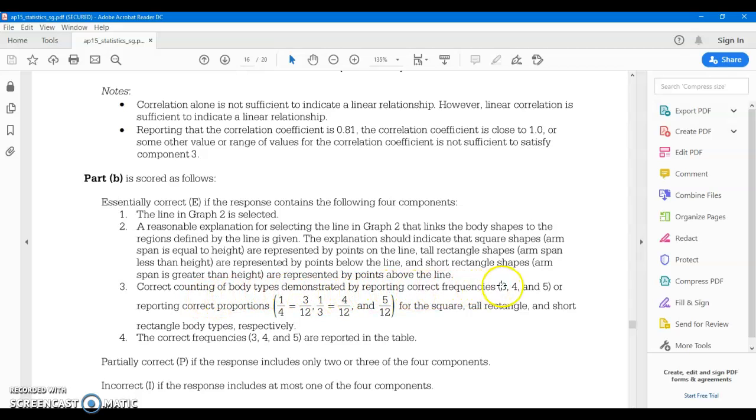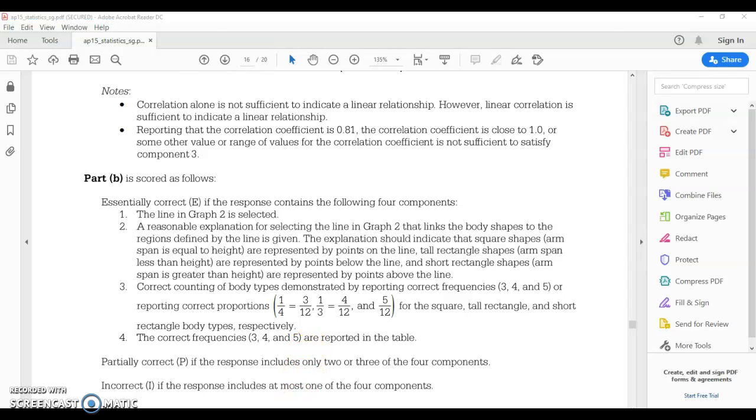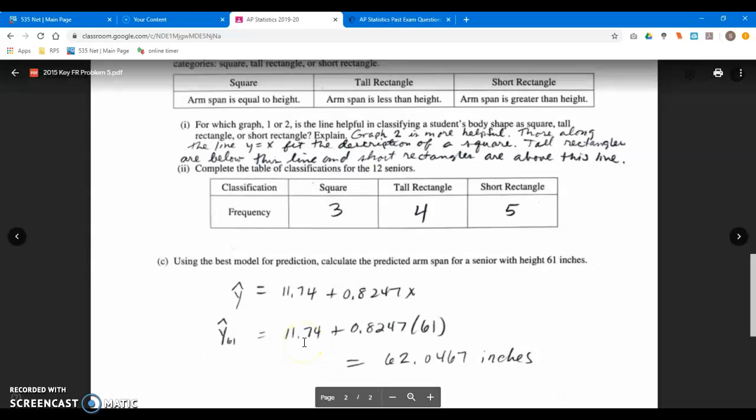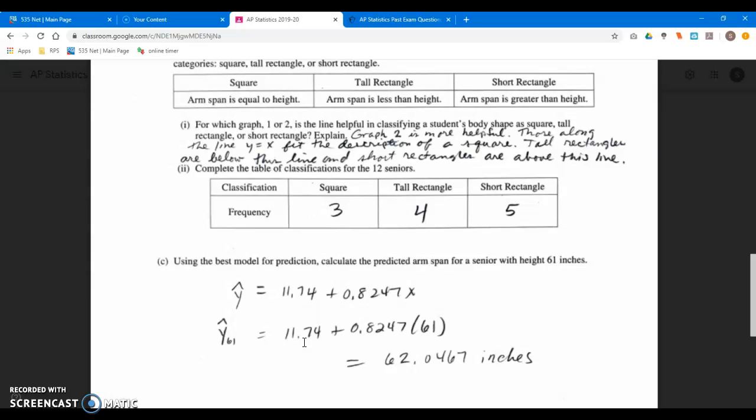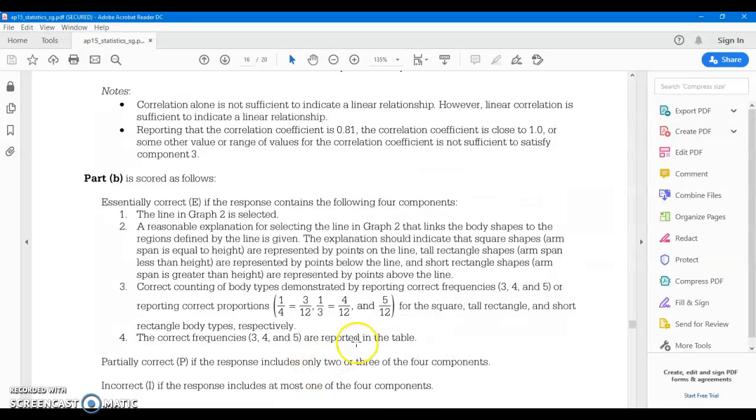Three: correct counting of body types demonstrated by reporting correct frequencies - three, four, and five - or reporting proportions. I don't remember writing proportions, but I do remember getting three, four, and five. And you have to report those on the table. So I'm not sure if I was supposed to do something else with three, four, and five. I have three, four, and five and put them on the table. So it's a little unclear to me what number three is exactly about. Correct tallying - I guess I did count correctly. I did count up the three, four, and five, and I did report them on the table, so perhaps I did take care of three and four.